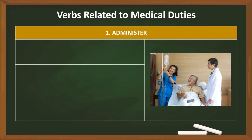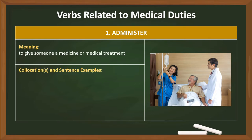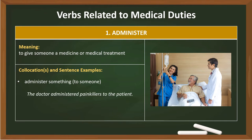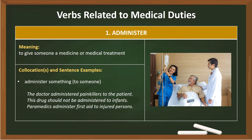1. Administer. Meaning: to give someone a medicine or medical treatment. Collocations: Administer something to someone. The doctor administered painkillers to the patient. This drug should not be administered to infants. Paramedics administer first aid to injured persons.